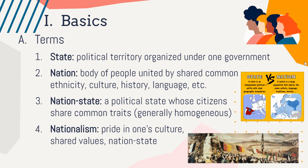Nation-states are generally what our countries are today — political states whose citizens share common traits and are generally homogenous. The United States is an outlier in that we're very heterogeneous with diverse peoples, but if you think about countries in Europe, Asia, Africa, the Middle East, and Latin America, they're typically dominated by one culture — a hegemony of that dominant culture — sharing common ethnicity, history, language, and culture. The nation-state is a modern type of government that really started developing en masse in the 19th century, following those Atlantic revolutions from our previous unit.